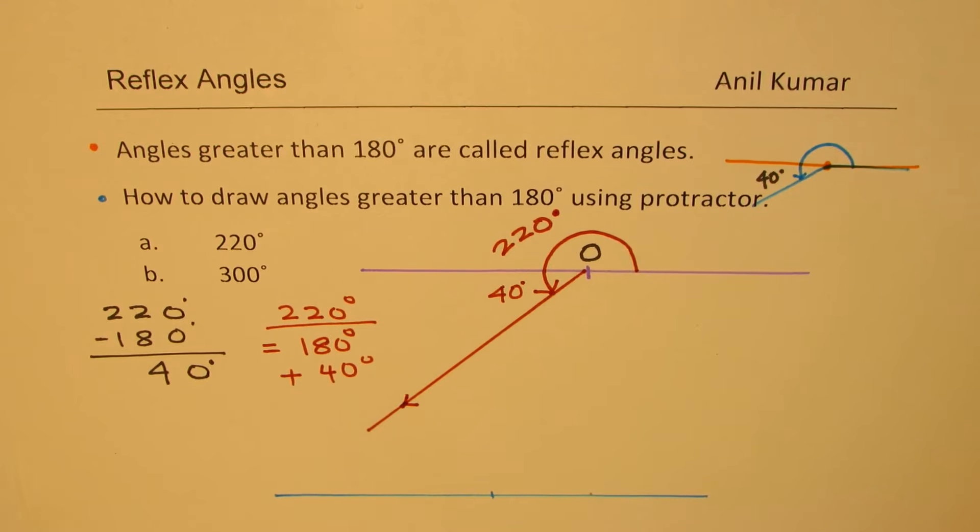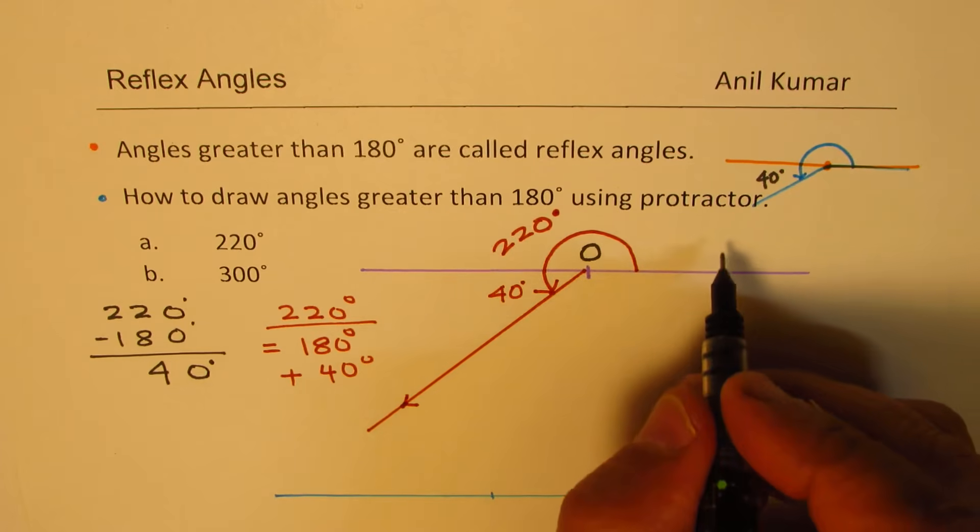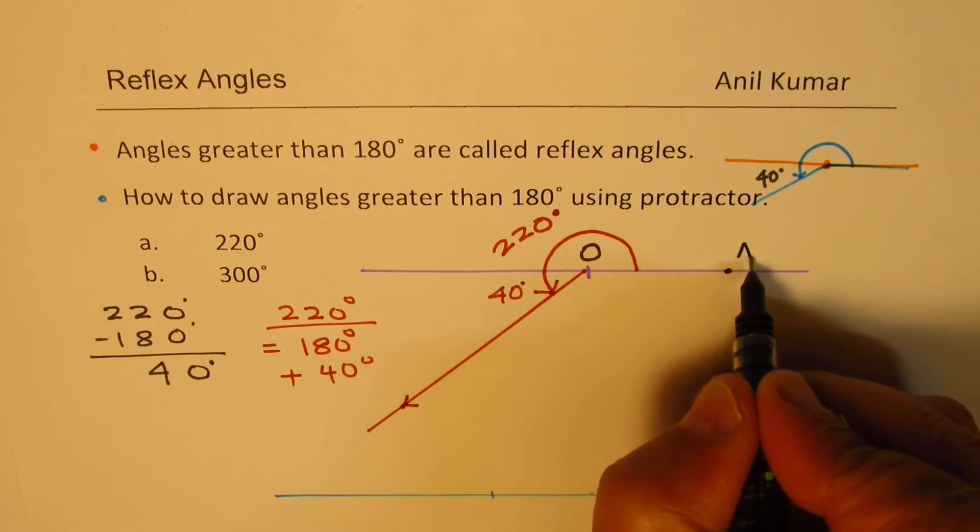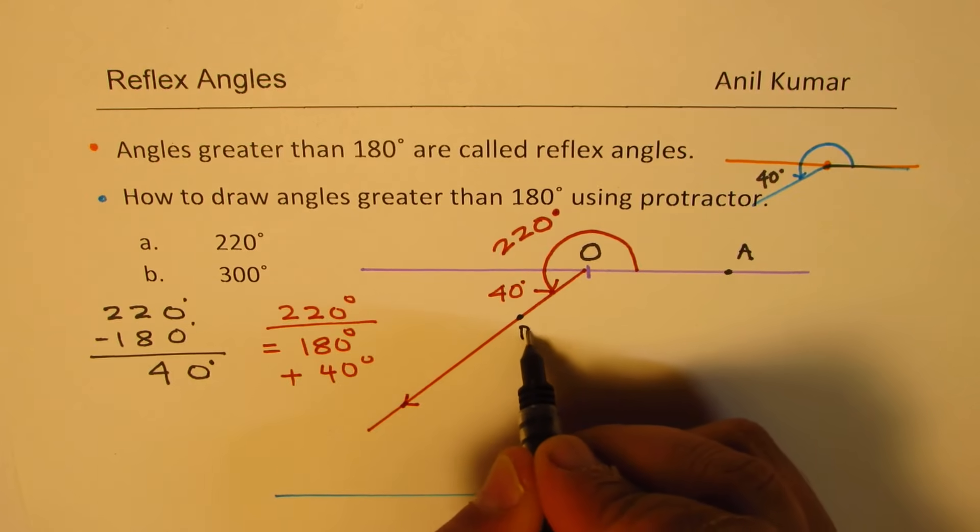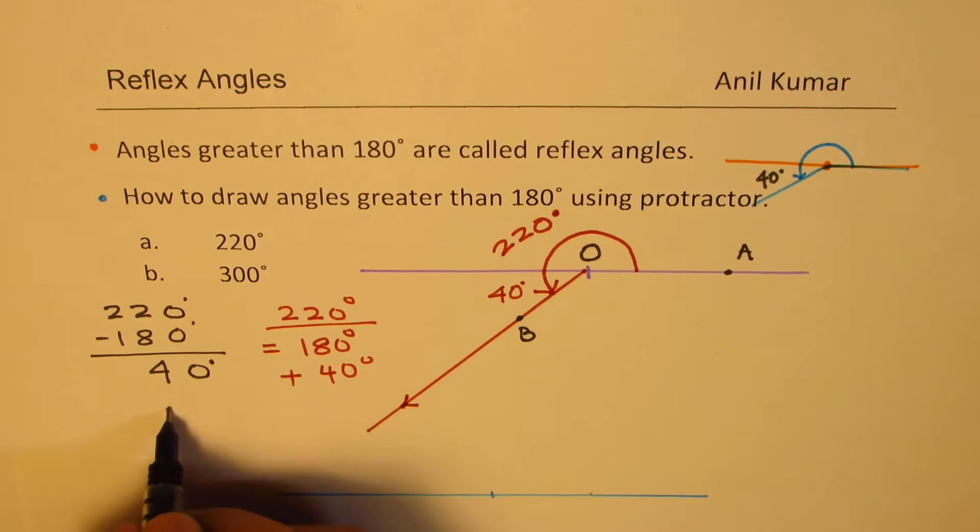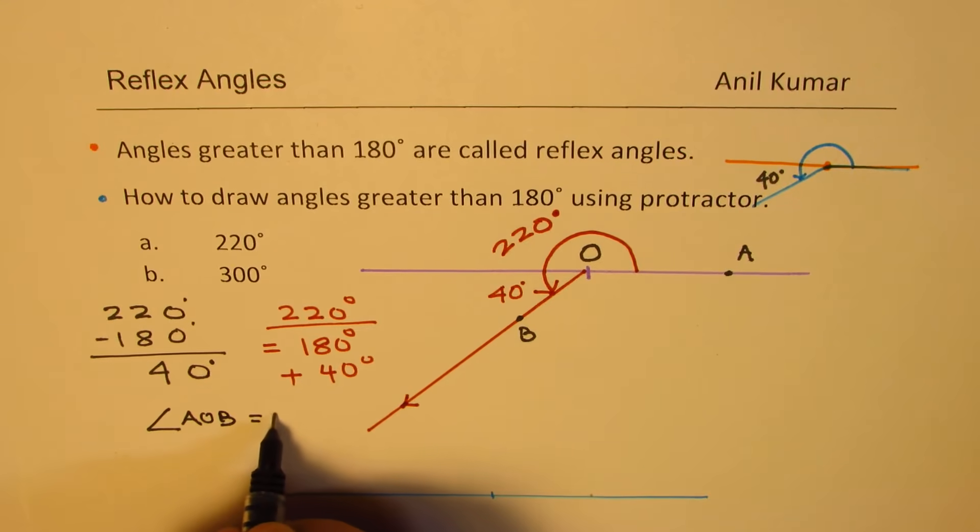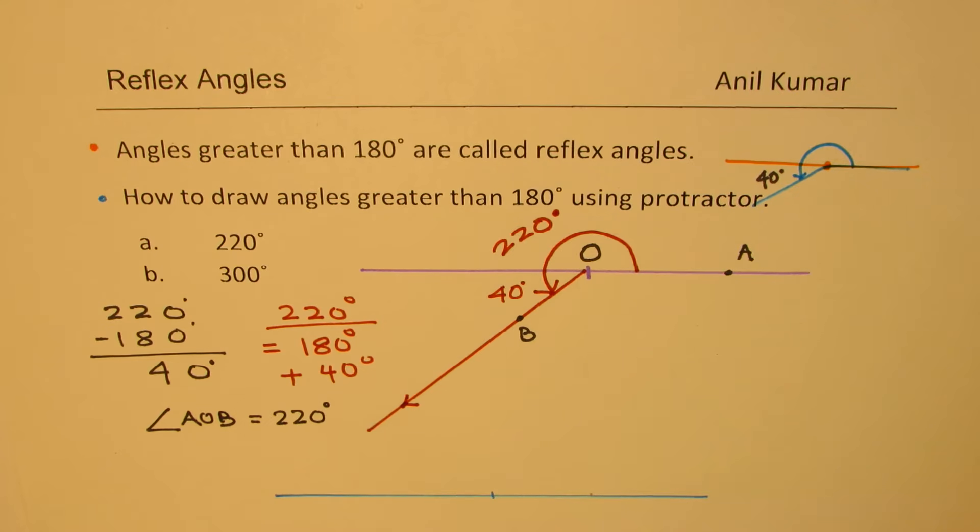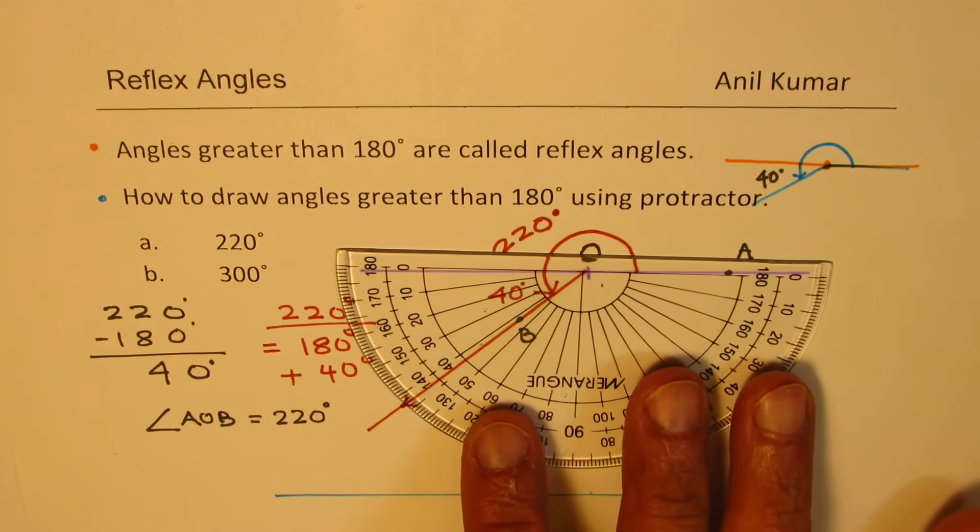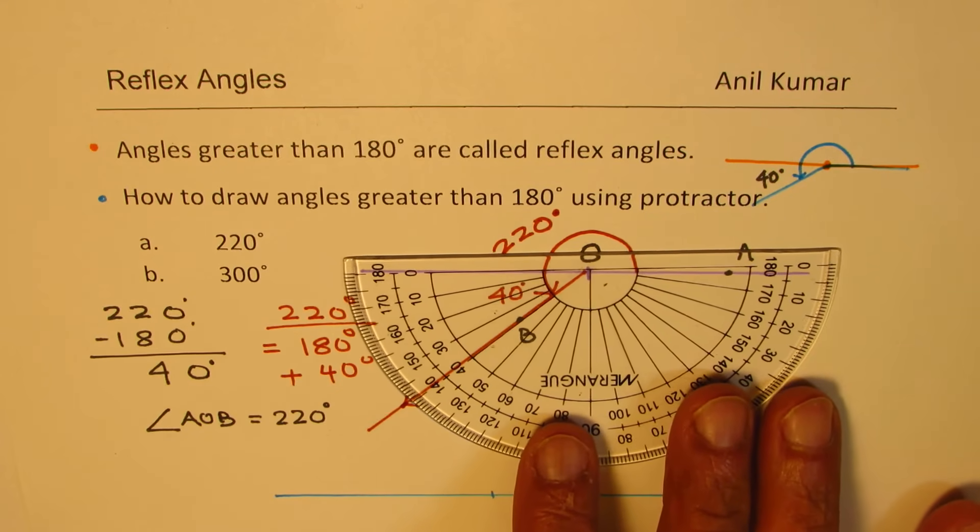So I hope the concept is clear. So if I mark a point on the initial arm as A and we have O here and let this point be B, then we know that the angle AOB is equal to 220 degrees. Now, using this concept, I would like you to draw 300 degrees. So take your time. You need to place your protractor right like this, and then draw 300 degrees.